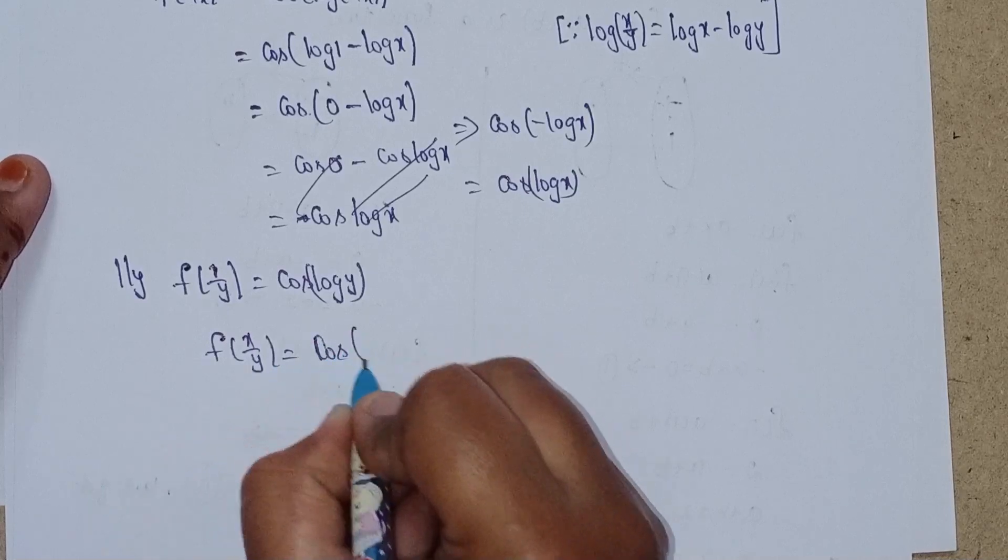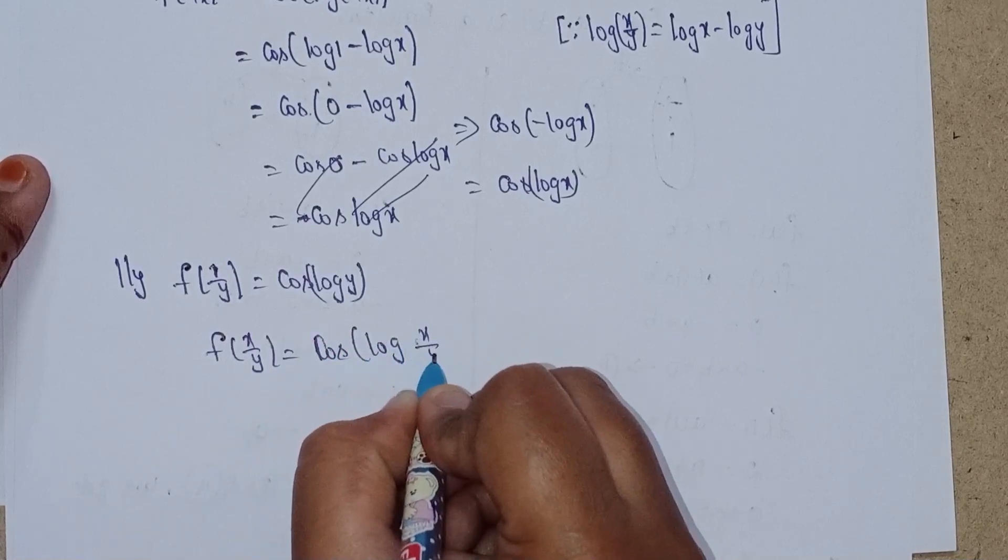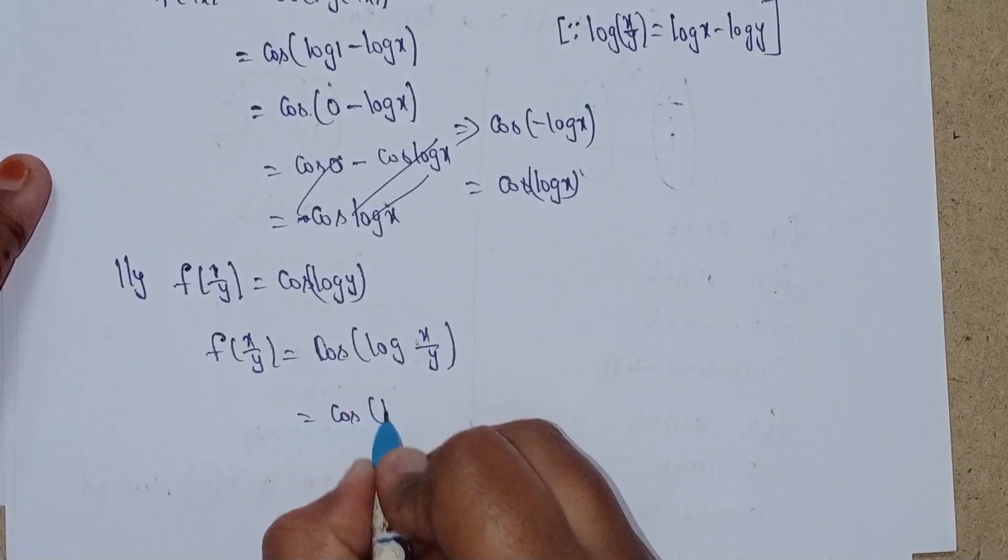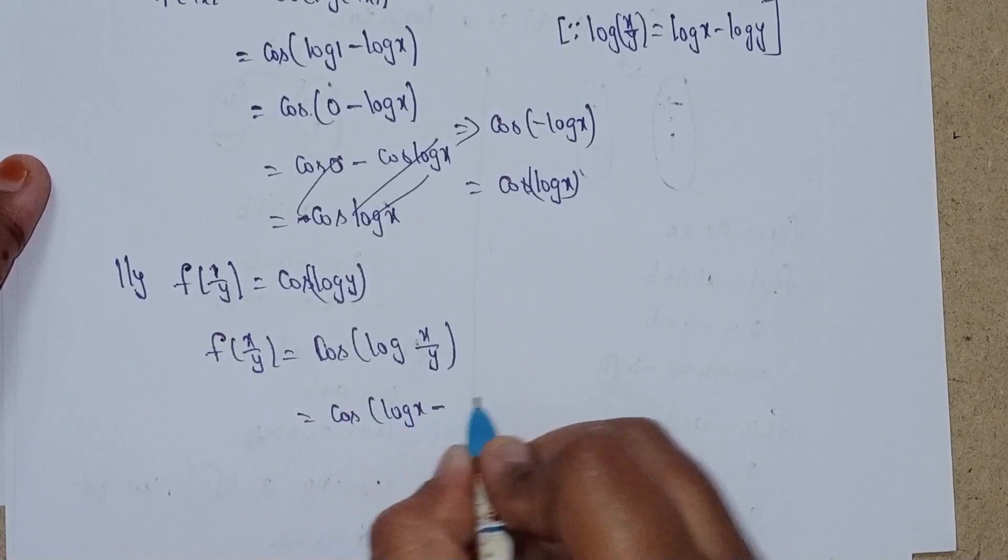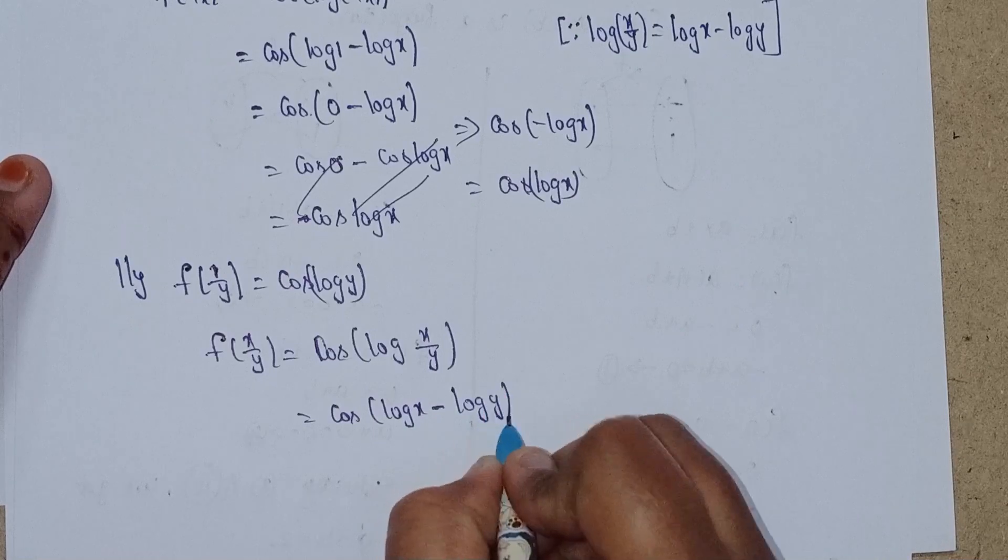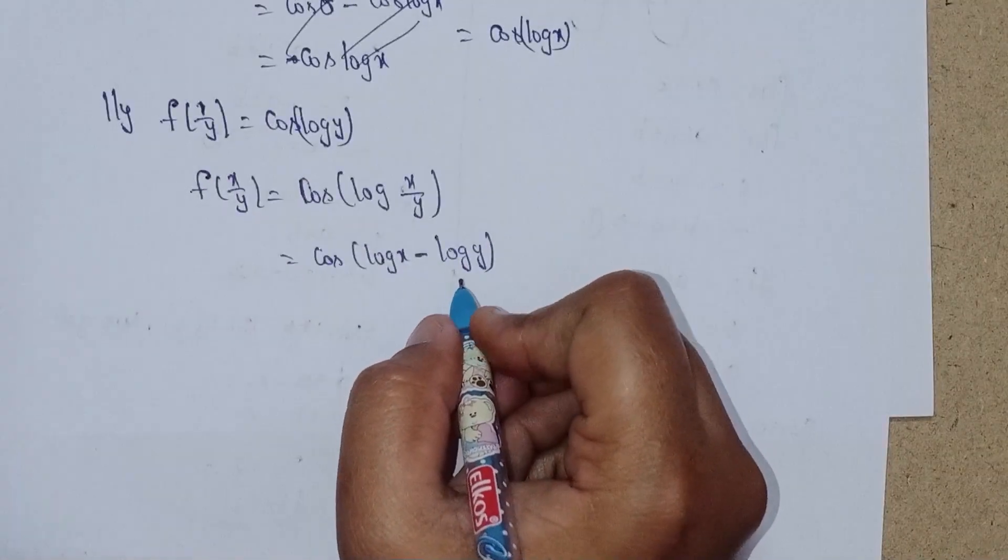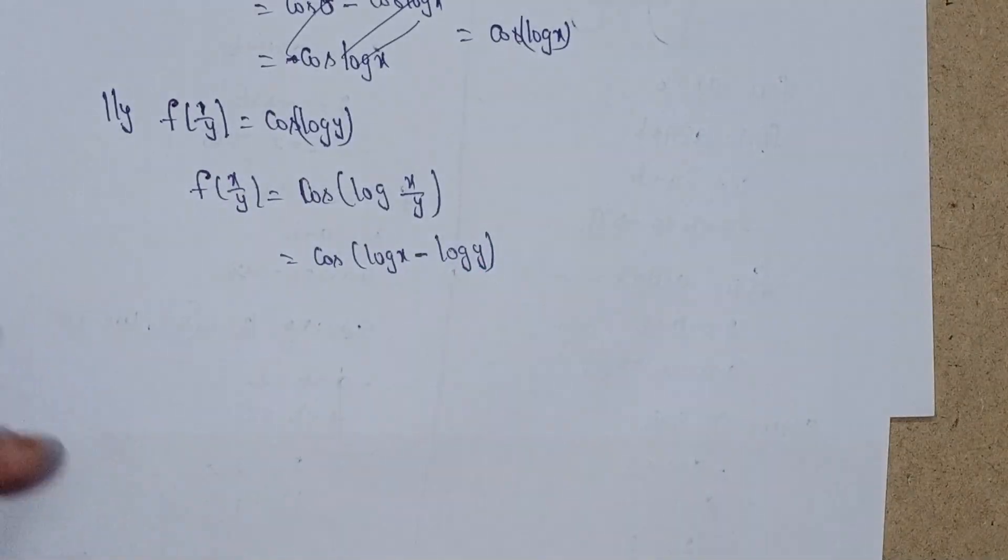Next, f(x/y) = cos(log(x/y)) = cos(log x - log y).